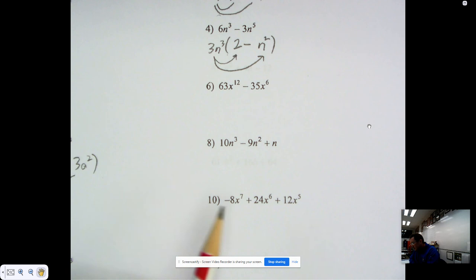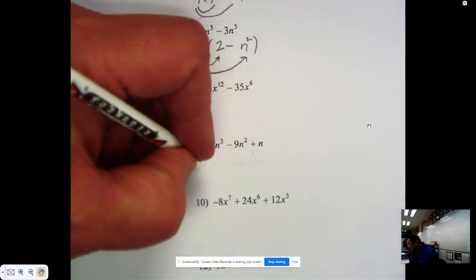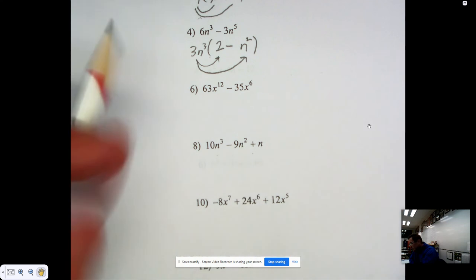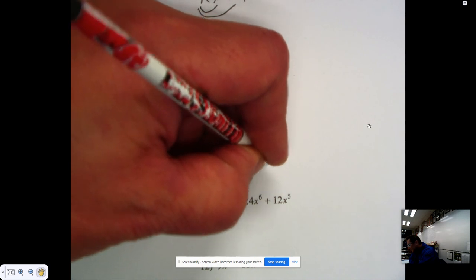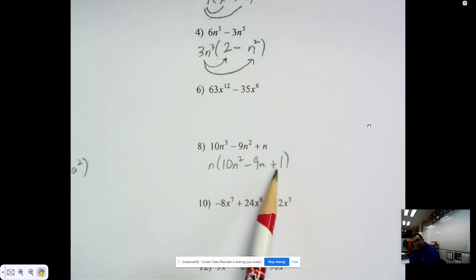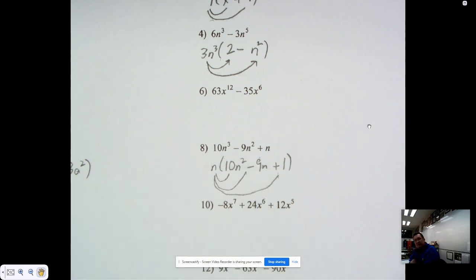On number 8, you might say, well, there isn't a number that goes into all three of those. And that's true. So you wouldn't pull out a number, but you would notice that there's an n in all of them. So we'll pull out an n. When we pull out an n, we'd have 10n squared minus 9n and then plus 1. Make sure you have this plus 1 here. Remember that the test here is: if you multiply it out, would you get the same thing? n times 10n squared is 10n cubed. n times negative 9n is minus 9n squared. And n times 1 is, in fact, n.